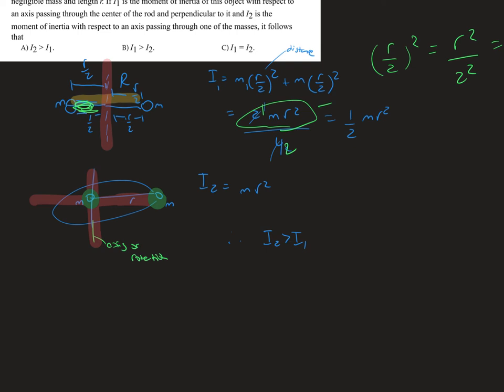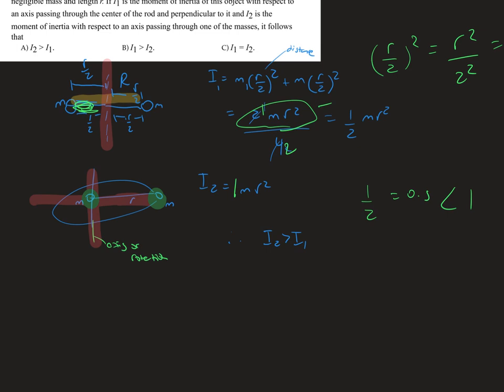Now as we compare the moment of inertia 2 to the moment of inertia 1, we know that one half is 0.5, and the coefficient for the moment of inertia 2 is 1, so 1 is much bigger than 0.5. And our answer would be letter a.